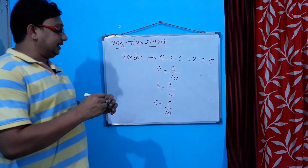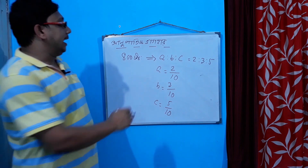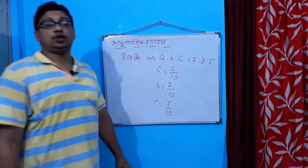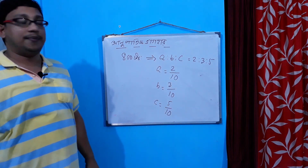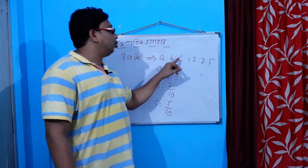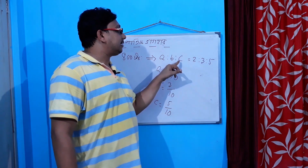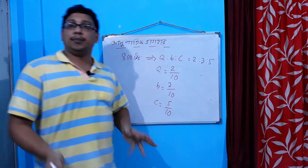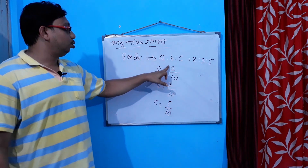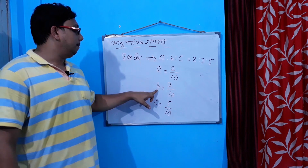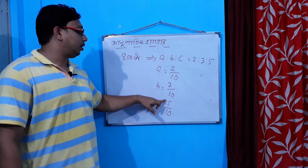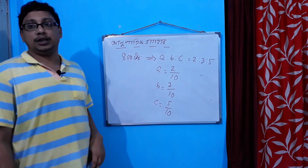Now if you look at a, b, c as 2, 3, 5 — when we take a step with a as 2, b as 3, c as 5, what do we call a? It's 2 out of 10, b is 3 out of 10, c is 5 out of 10.